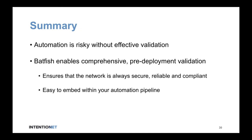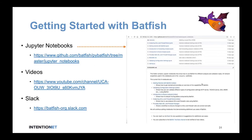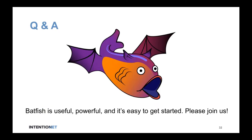To summarize what we talked about today: automation is an extremely important part of network engineering, but without effective validation it's very risky. Batfish is the tool that can provide comprehensive pre-deployment validation to complete your automation pipeline. With Batfish, you can ensure your network is always secure, reliable, and compliant. It's very easy to embed Batfish into your automation pipeline. Please check out our Jupyter notebooks, YouTube videos, and find us on Slack — we're happy to help you go down this journey of integrating Batfish into your network automation workflow.